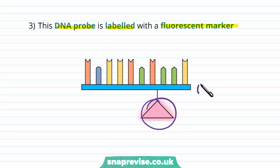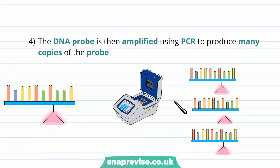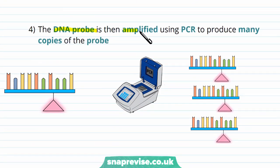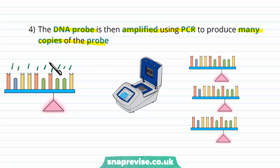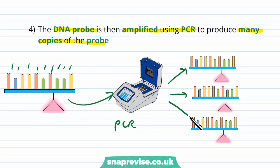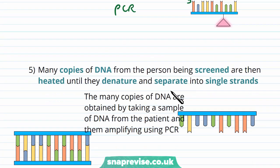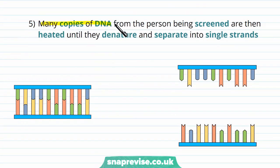We then amplify the DNA probe using PCR to produce many copies of it. The probe is complementary to the mutant allele and ready to bind, and after PCR we have lots of copies of it. Similarly, many copies of DNA from the person being screened are also made, then heated until they denature and separate into single strands.